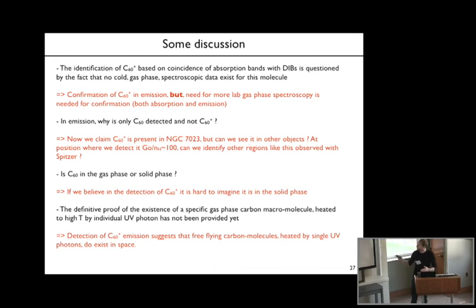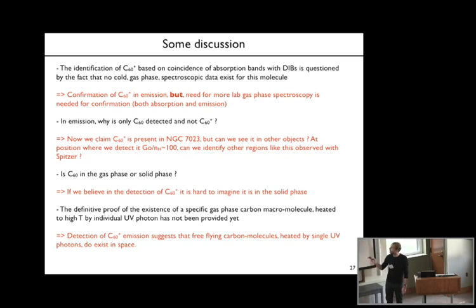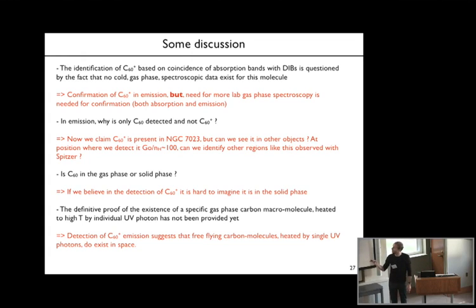Some conclusions about C60+. Regarding the identification with the diffuse interstellar band, we seem to be confirming that C60+ can also be seen in emission. However, it would be nice to confirm this in other objects, and so far this has not been possible in emission. Also for absorption it would be nice to have gas-phase laboratory data to confirm the identification.